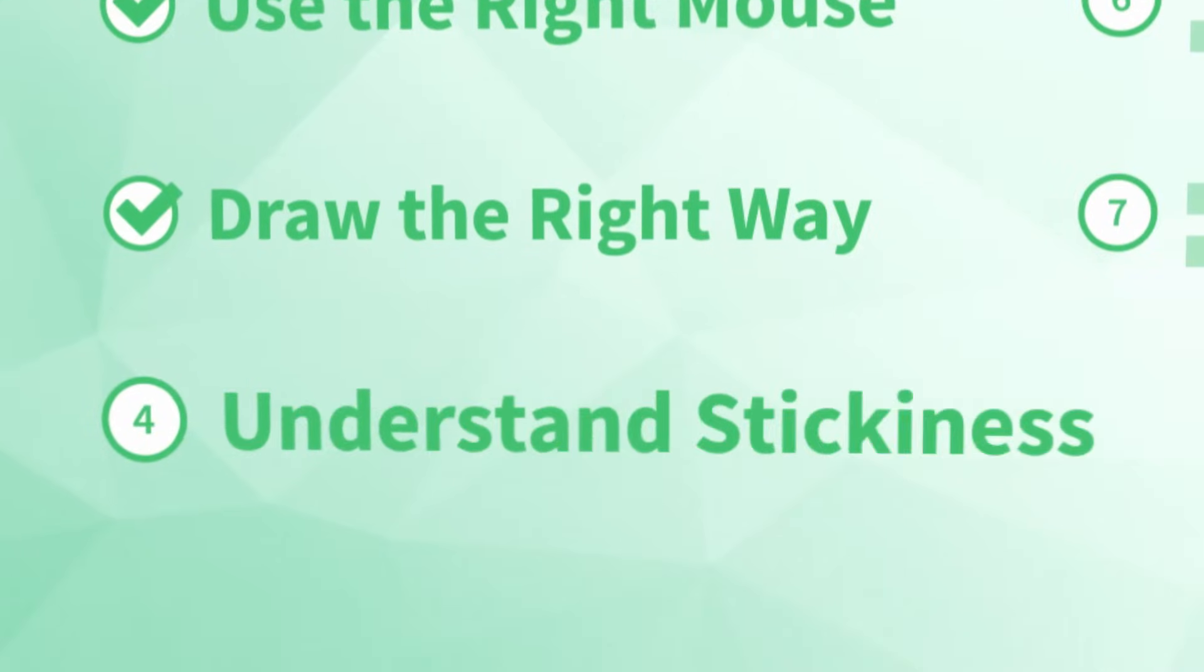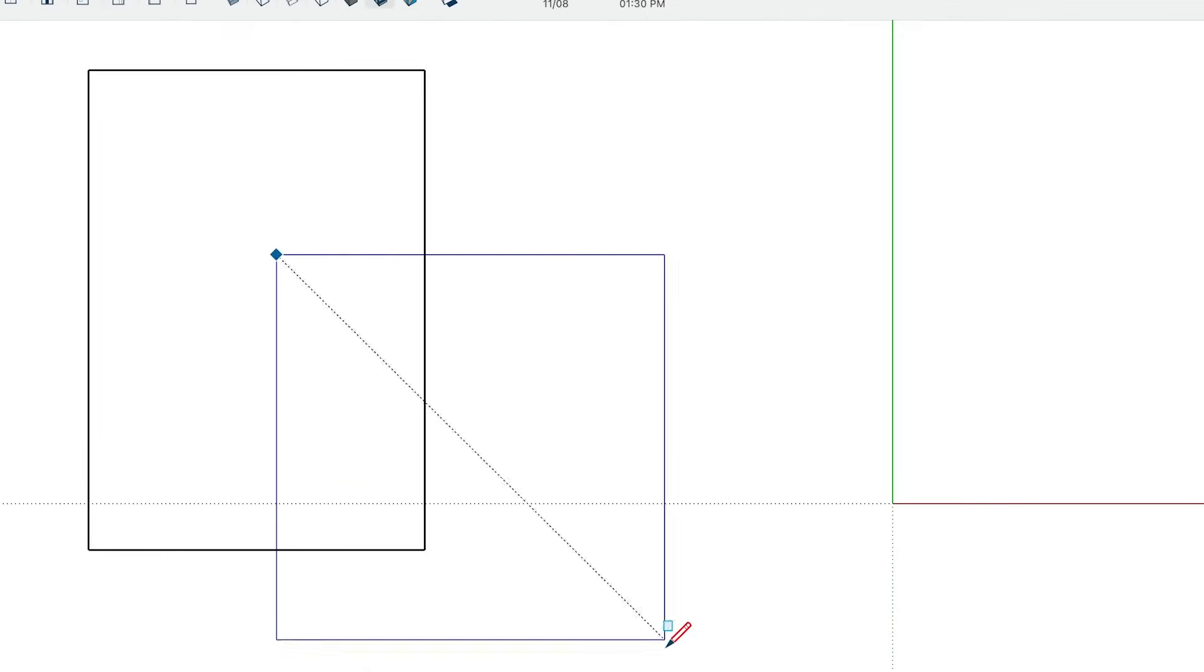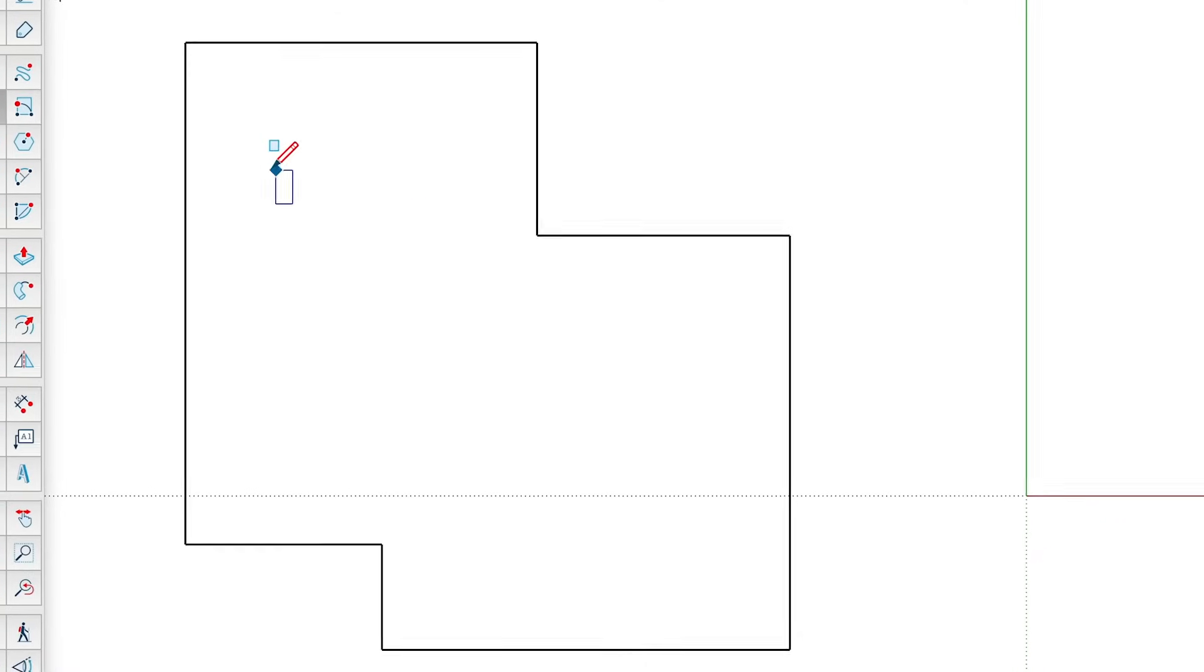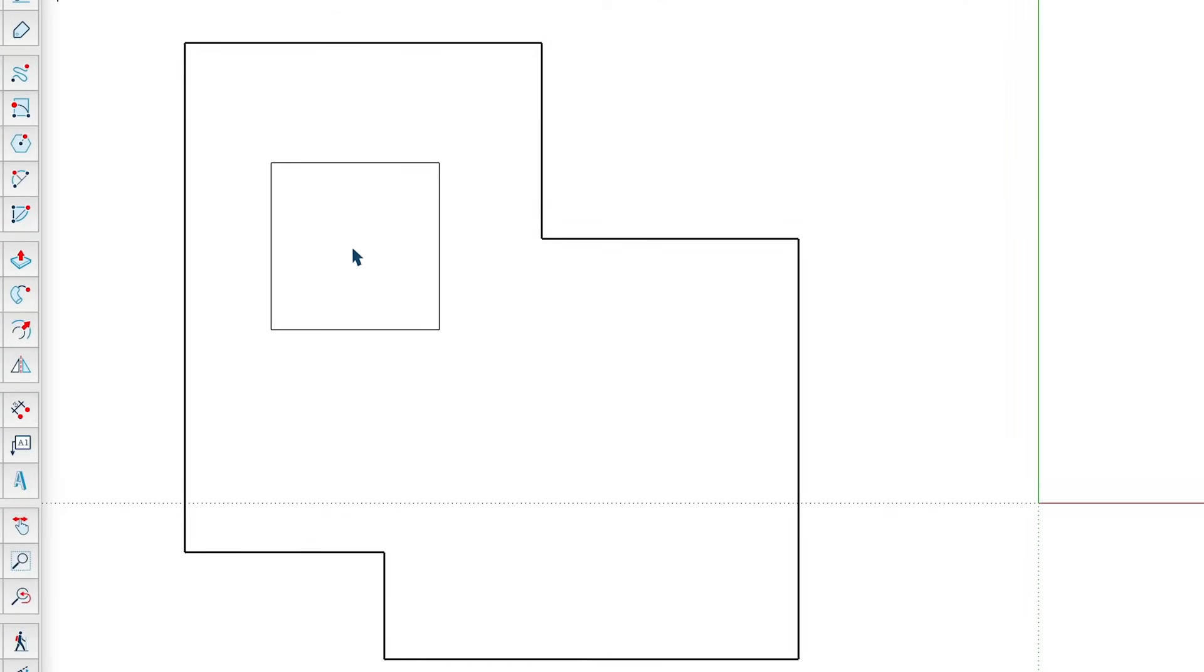Number four. Understand stickiness. In SketchUp, edges and endpoints stick to other edges and endpoints. This is a good thing. You can overlap shapes and edit them to create new ones. Try it. Practice overlapping geometry. Then use the eraser tool to delete edges you don't need. Or get rid of faces by right-clicking on the face and picking the option for erase. In this way, stickiness is helpful for modeling quickly in SketchUp.